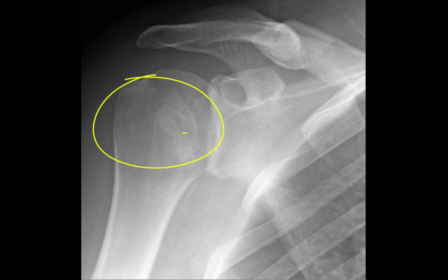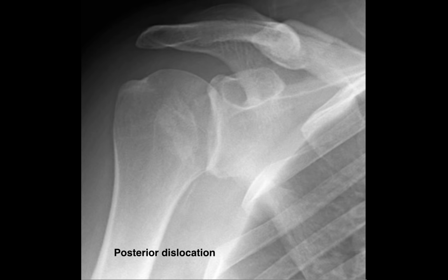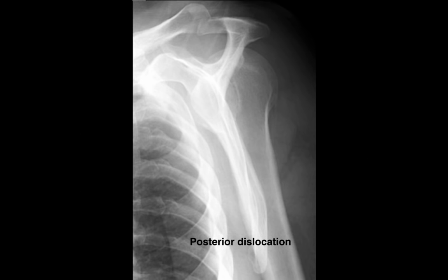Here we've got a humeral head that appears to be articulating with the glenoid fossa, however there's no space between the two. Apart from that, there's an abnormal symmetry to the humeral head — it looks more like a drumstick or a light bulb compared to a walking stick. This is a pathognomonic sign for a posterior dislocation, and that symmetry occurs because the humerus is rotated. Posterior dislocations are fairly rare, comprising less than 5% of all dislocations. They tend to occur with forced muscle contraction, such as might occur with an electrocution. We confirm the posterior dislocation by looking at our lateral Y view, where we can see the humeral head isn't overlying the Y intersection but is lying posterior to it.